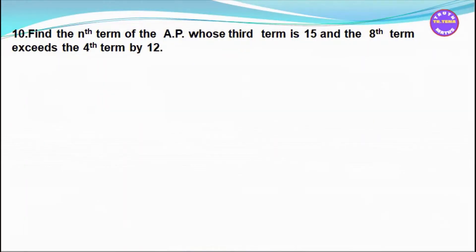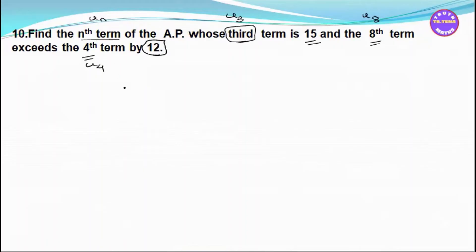Now we will find the end term. Given that U3 is 15 and U4 is 12. The term U3 equals 15 and U8 is also given. U4 is 12.